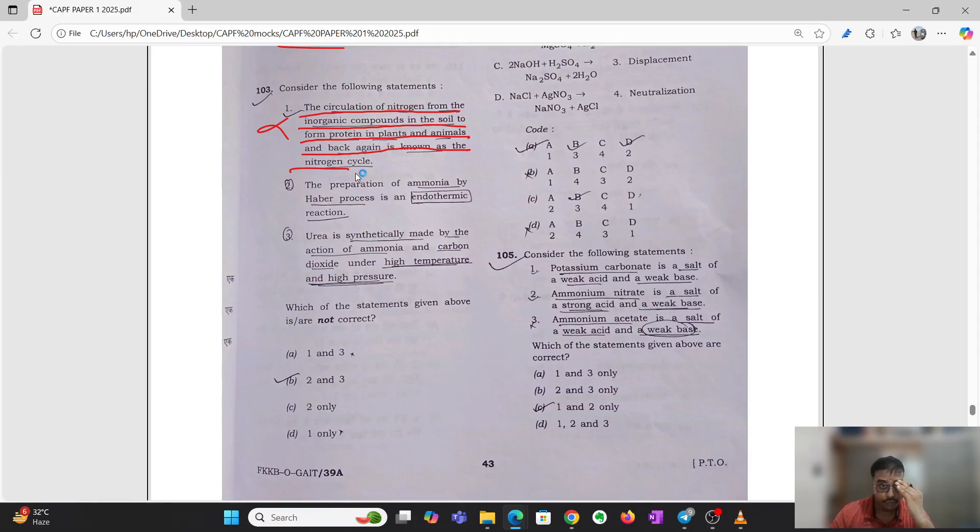Second statement: the preparation of ammonia by Haber process is an endothermic reaction. This is exactly right. Urea is synthetically made by the action of ammonia and carbon dioxide under high temperature and high pressure. This is also wrong, so the answer would be two only.